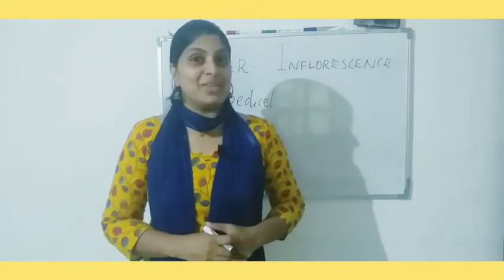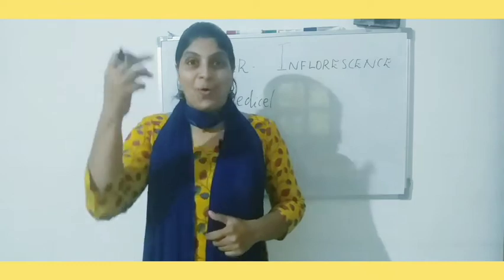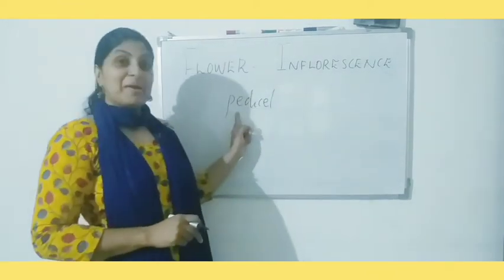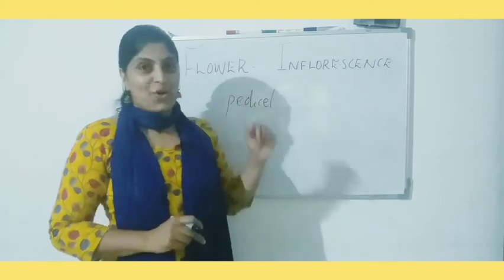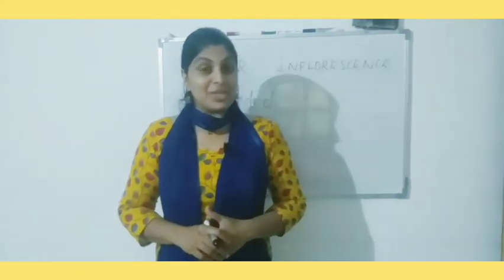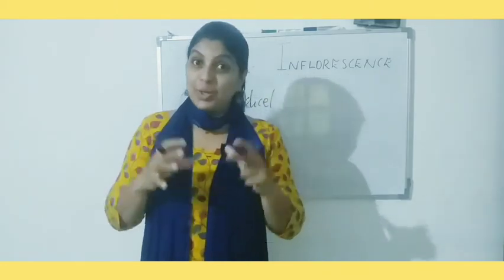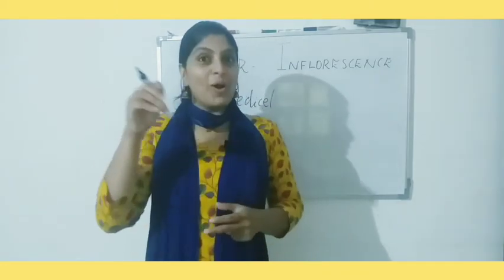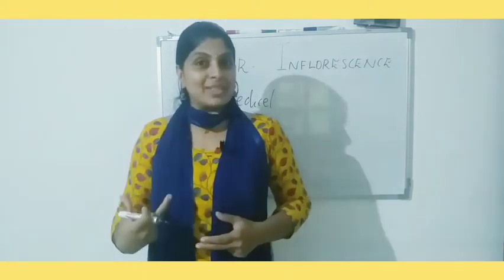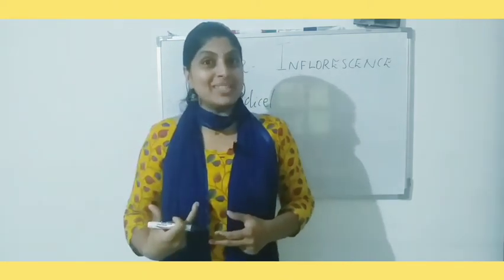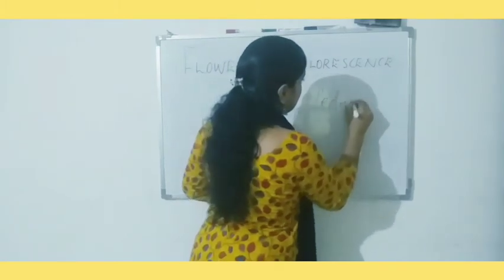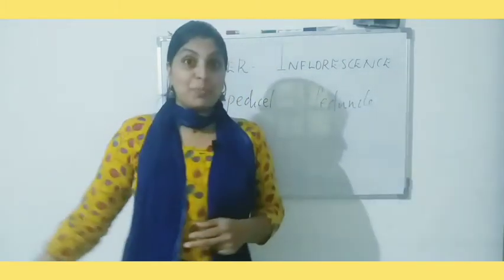In some cases of plants we can see the formation of a flower on a single stock, which is known as a pedicel. Pedicel is the stock of the flower. In some other cases of plants we can see the formation of flowers as a group, meaning small flowers are arranged on a common axis, which is known as peduncle.